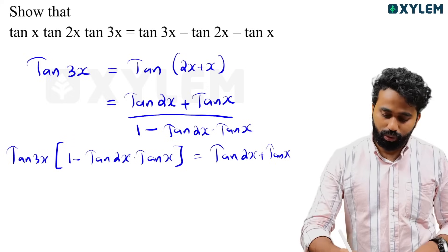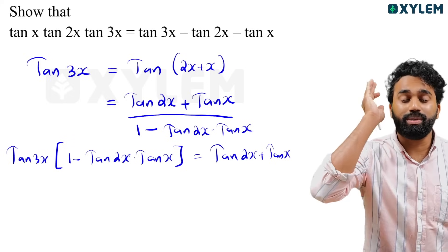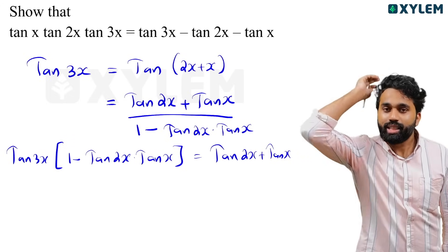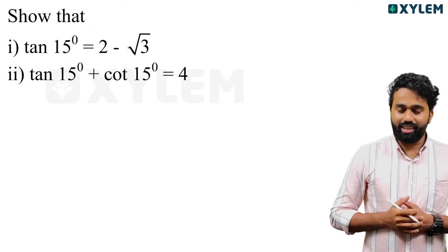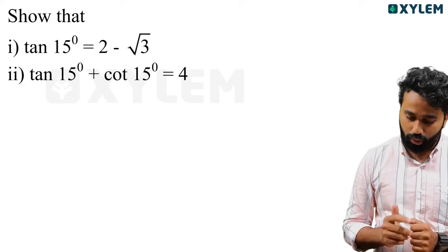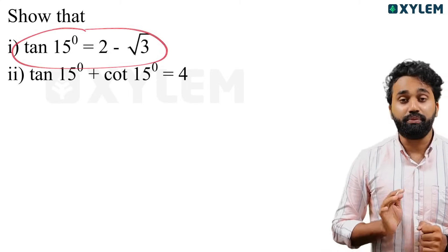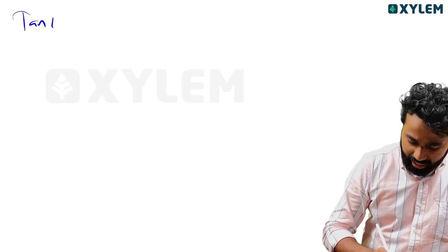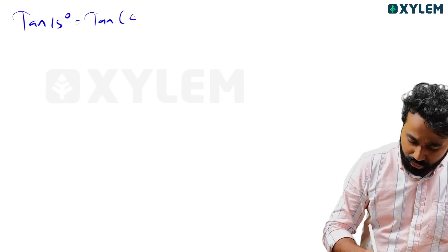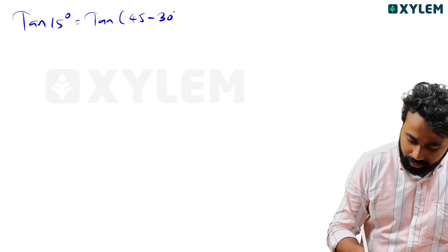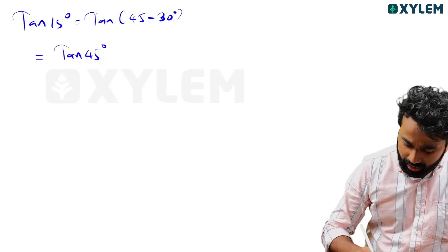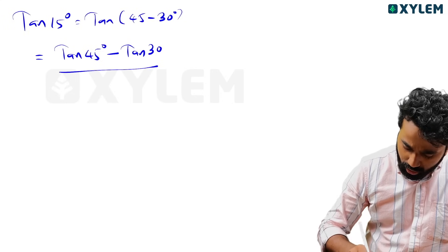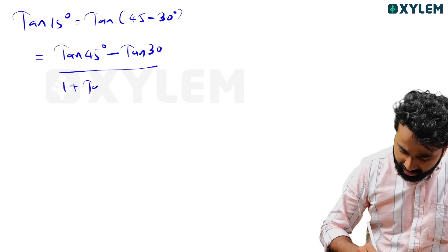This is a 3-mark question. Now the next one is tan 15 degrees. Tan 15 degrees is equal to tan of 45 minus 30. Using the formula: tan of x minus y equals tan x minus tan y divided by 1 plus tan x into tan y.